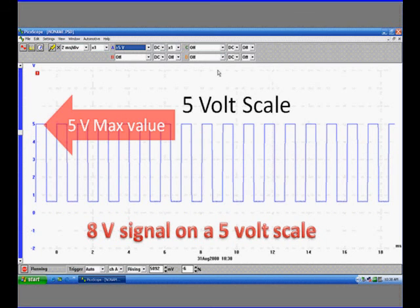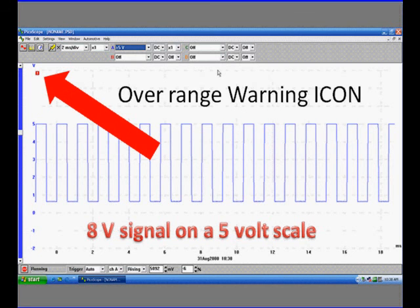Now, one of the dangers is we could be looking at an 8 volt signal on a 5 volt scale and it looks perfectly normal except for that red overrange icon we told you in the upper left up there. This overrange warning has to be paid attention to. Anytime you have that, you are on the wrong scale.